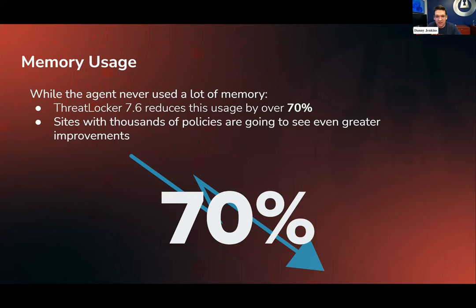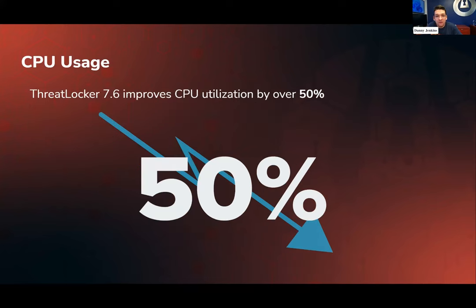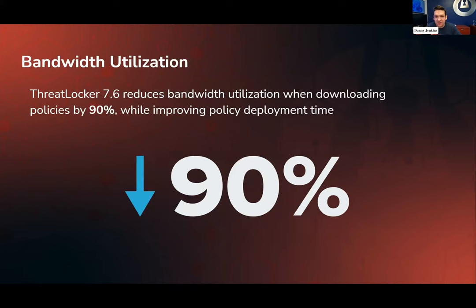The first time I opened ThreatLocker on my computer and saw we were using 50 megabytes of RAM in one case, I thought, is there something wrong? Is it not working? So that was really exciting. The other area is reducing CPU usage. It was actually really easy to reduce memory usage at the cost of CPU, because you can iterate through things in different ways that are expensive on the CPU. But while reducing our memory, we've also managed to reduce the CPU utilization of ThreatLocker by over 50%. A lot of that comes down to the next stage as well, which is reducing the bandwidth utilization on the endpoint.